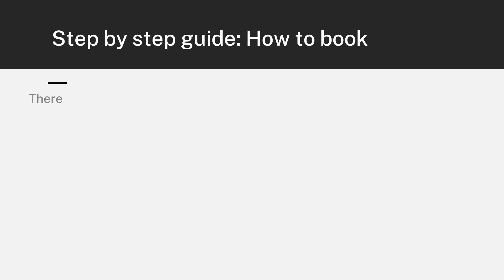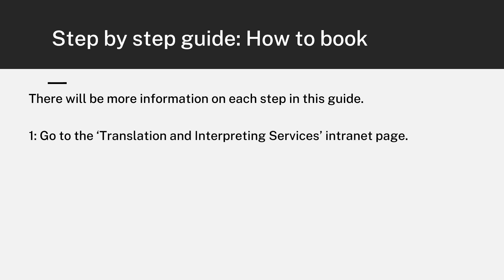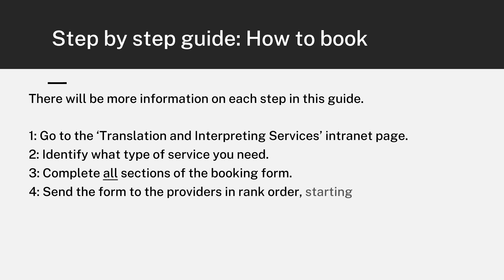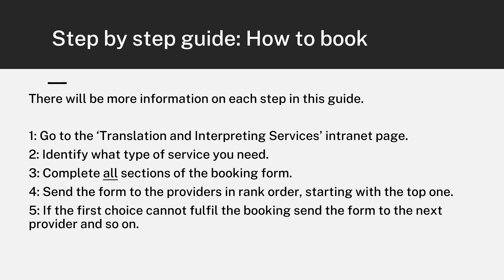Step-by-step guide — how to book. There will be more information on each step in this guide. One: go to the Translation and Interpreting Services intranet page. Two: identify what type of service you need. Three: complete all sections of the booking form. Four: send the form to the providers in rank order, starting with the top one. Five: if the first choice cannot fulfil the booking, send the form to the next provider and so on. Six: the provider will confirm the booking and costs.